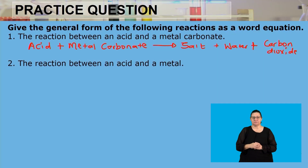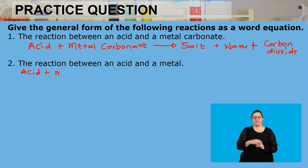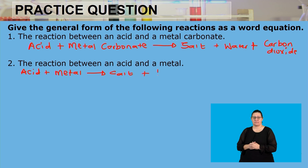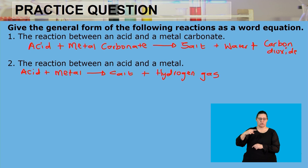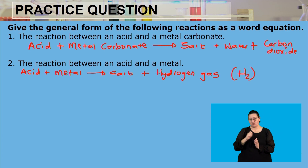The remainder of the acid after it has donated the hydrogen — the non-metal part — reacts with the metal part to form the salt. The hydrogen donated by the acid is on its own as hydrogen gas. So the general reaction is: acid + metal → salt + hydrogen gas. Remember, hydrogen gas is a diatomic molecule, so it must be written as H2.